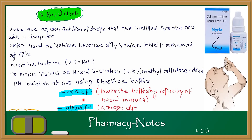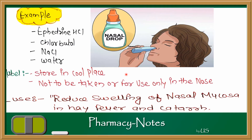If the pH of the nasal drop is slightly more acidic than the nasal mucosa's buffer capacity can handle, irritation occurs. If the solution is highly alkaline, damage and deterioration can result. A good example of a nasal drop is ephedrine HCl, which narrows the nasal blood vessels, releasing blockage and reducing congestion. Ephedrine, chloramine, NaCl, and water are the main constituents of this formula. The label should state: store in a cool place, not to be taken internally, and for nasal use only.